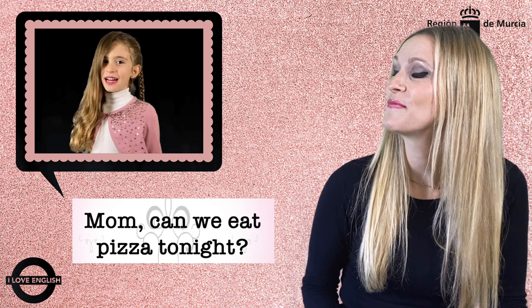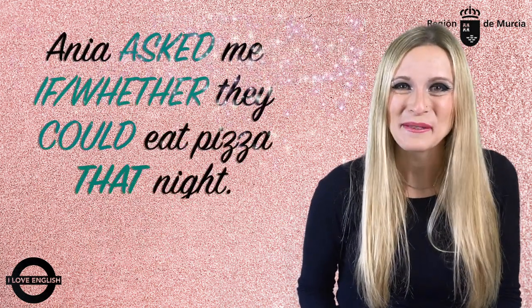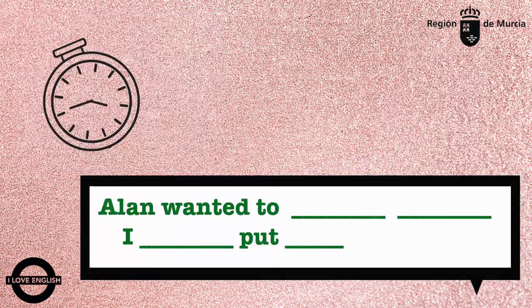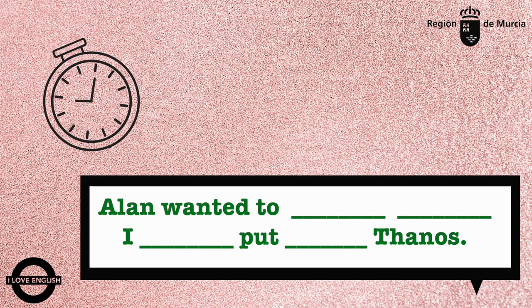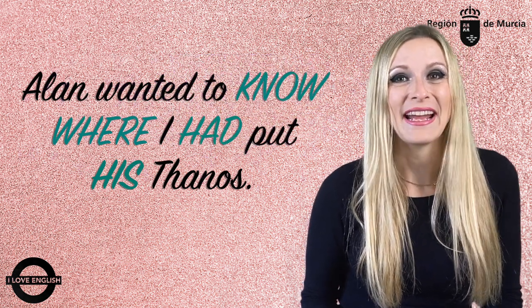You've now got 10 seconds to change the following questions into reported speech. 'Mom, can we eat pizza tonight?' — Anna asked me if they could eat pizza that night. 'Where have you put my thumbs?' — Alan wanted to know where I had put his thumbs.